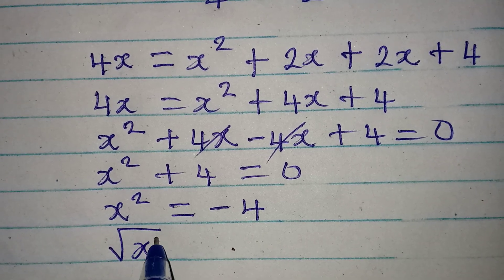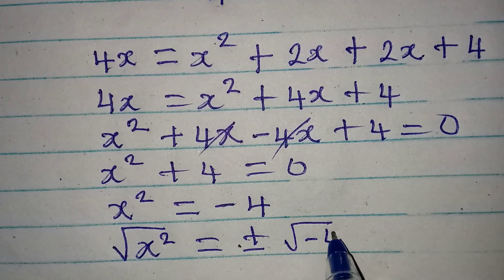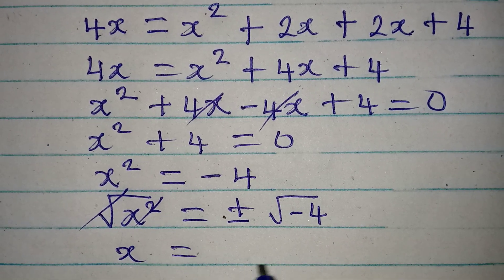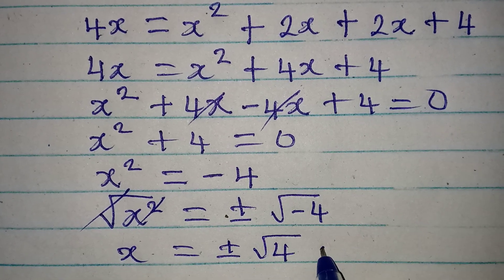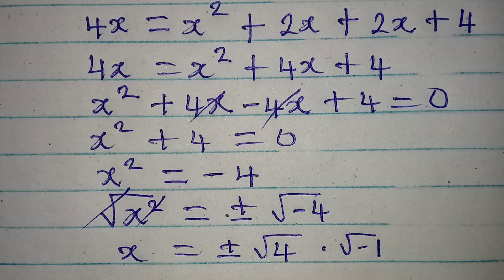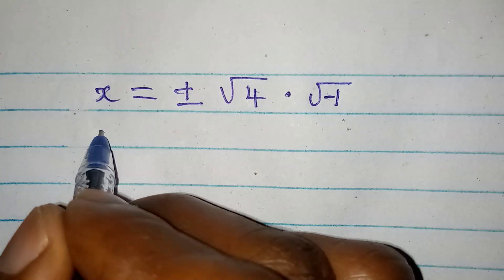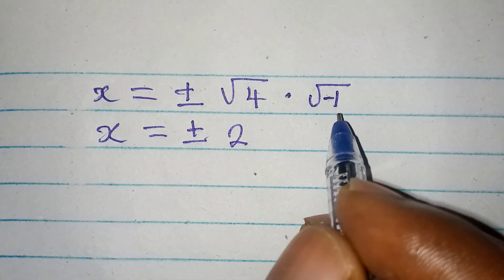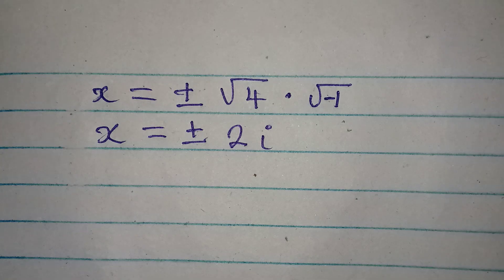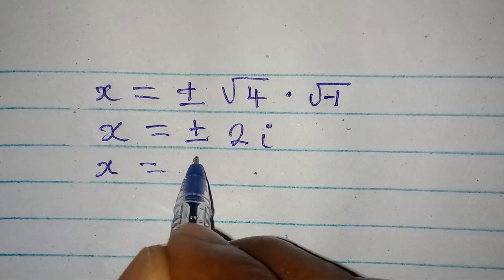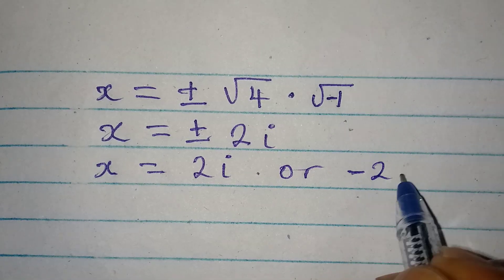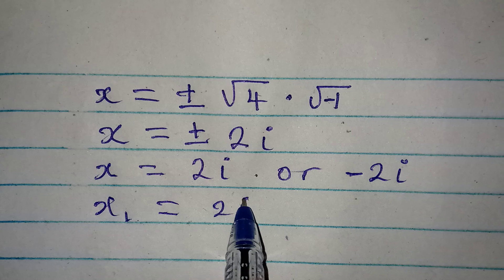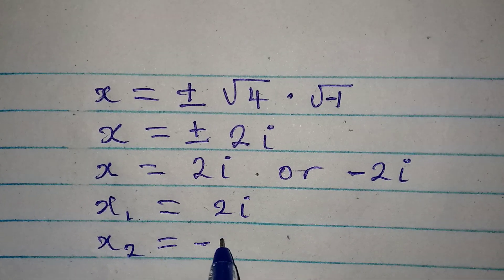Taking the square root of both sides, x equals plus or minus square root of negative 4, which equals plus or minus square root of 4 times square root of negative 1. Since square root of 4 is 2 and square root of negative 1 is i, we get x equals 2i or negative 2i. So x₁ equals 2i and x₂ equals negative 2i.